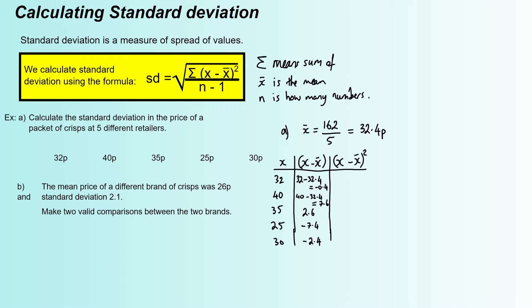And the last column, what we're going to do is we're going to square each one of them. So we're going to take negative 0.4 and square that. We're going to take the 7.6 and square that. Now, because you're squaring them, when you're squaring any number, you will always get a positive answer. So even if you're squaring a negative, like the negative 0.4 here, you're going to get a positive answer. So all of our answers here should be positive. So we get 0.16, we get 57.76, we get 6.76, 54.76, and 5.76.